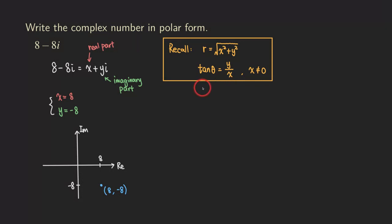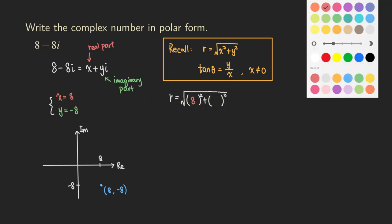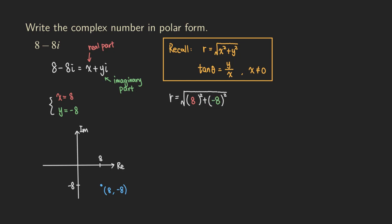Now we use the formula to figure out what r is equal to by plugging in x and y. So r equals the square root of 8 squared plus negative 8 squared. That gives us the square root of 64 plus 64, which is the square root of 128. Since 64 is a perfect square, we can take it outside the square root, giving us 8 times the square root of 2. So r equals 8 root 2.